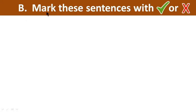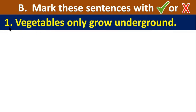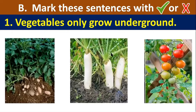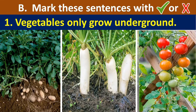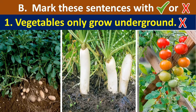Question number B: Mark these sentences with a tick mark or cross mark. If it is right we tick, if not we cross. Number one: Vegetables only grow underground. Some vegetables grow underground, but others grow above ground, so this sentence is not correct — it is wrong.